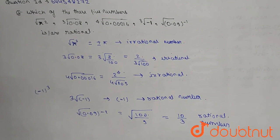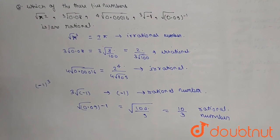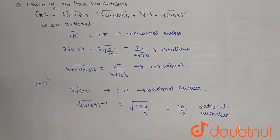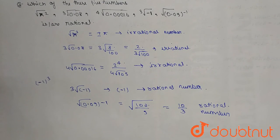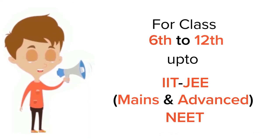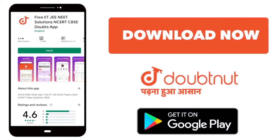So this is a rational number. This means only the 4th and 5th numbers are rational numbers; the rest are irrational. Thank you friends, hope you liked the video. For class 6 to 12, IIT JEE and NEET level, trusted by more than 5 crore students — download Doubtnut today.